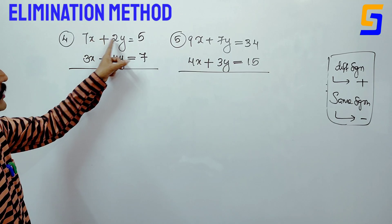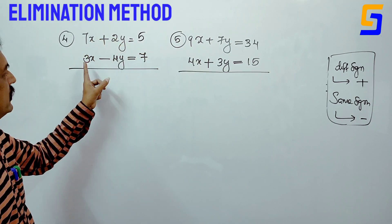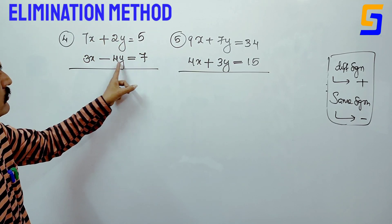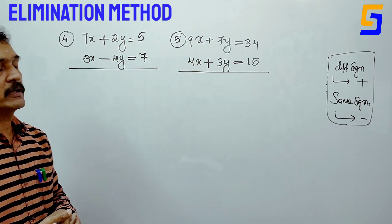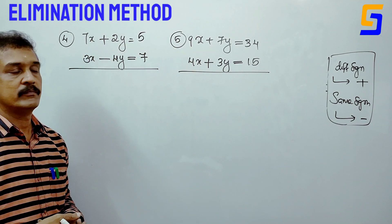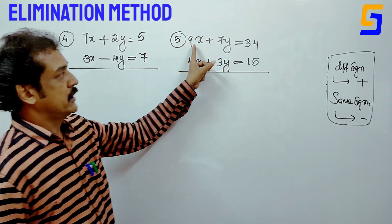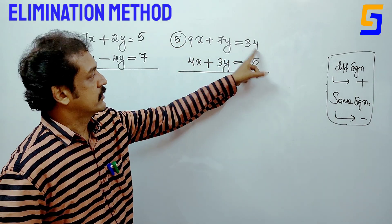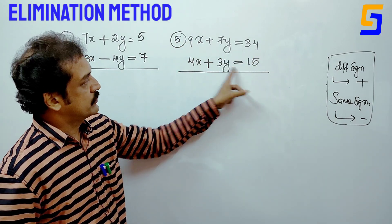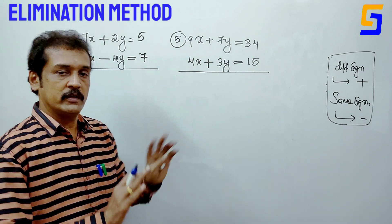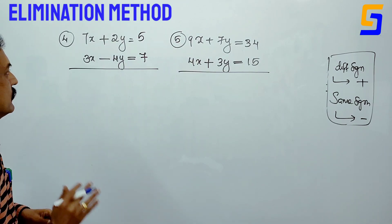Practice problems: Solve 7x plus 2y equals 5 and 3x minus 4y equals 7. Also, 9x plus 7y equals 34 and 4x plus 3y equals 15.